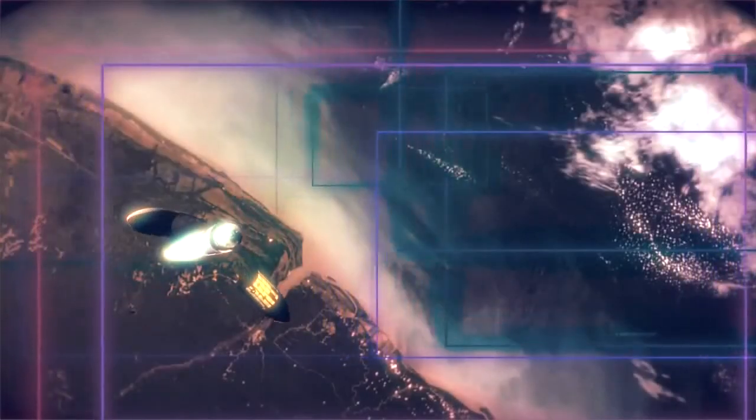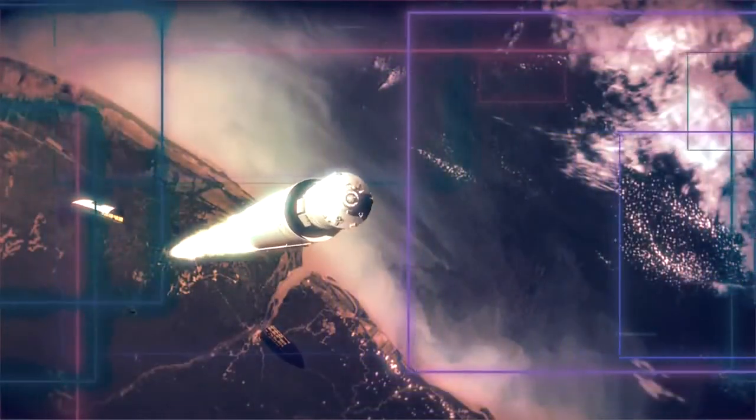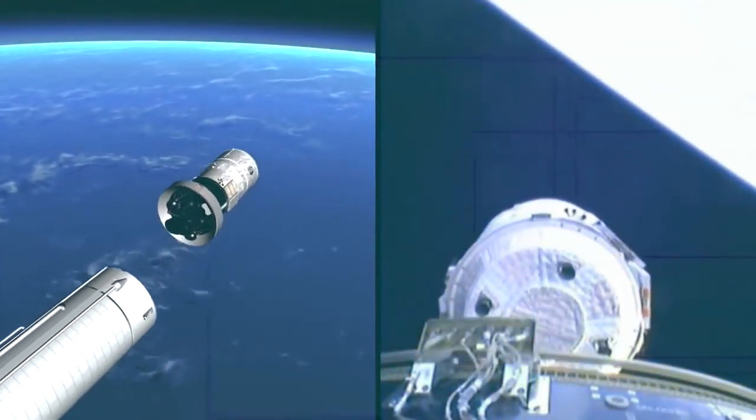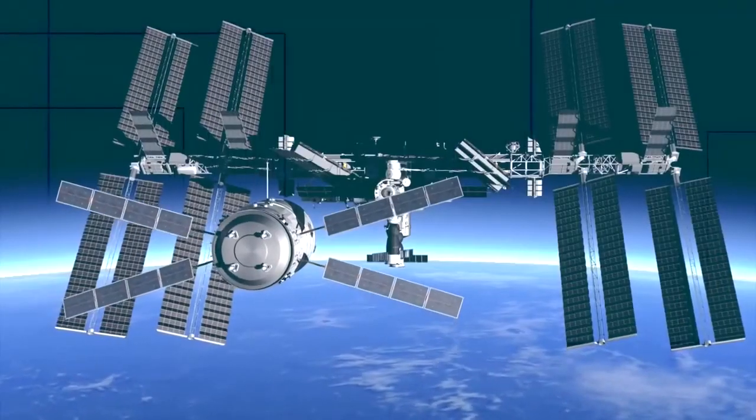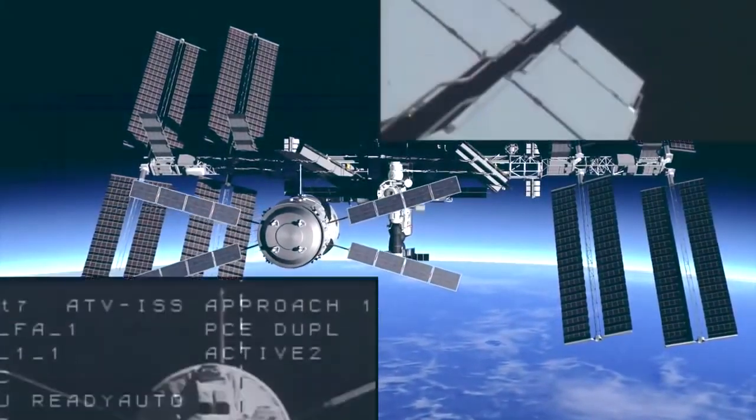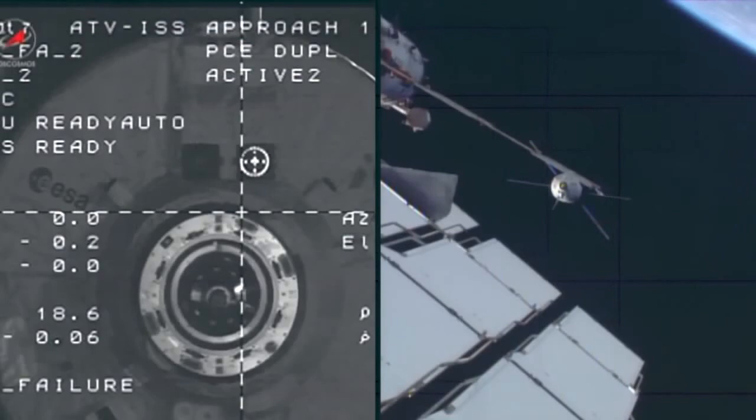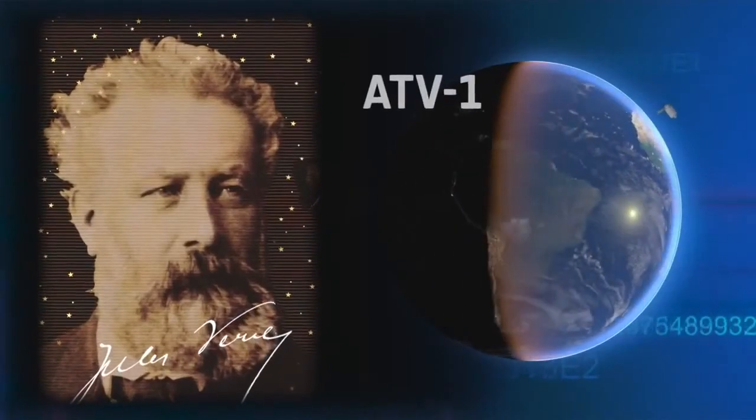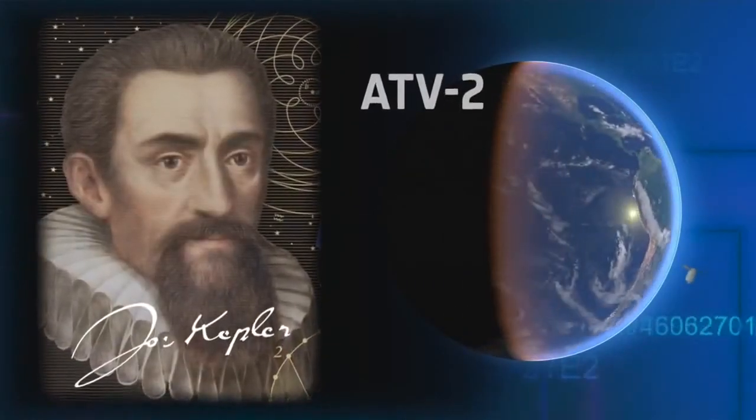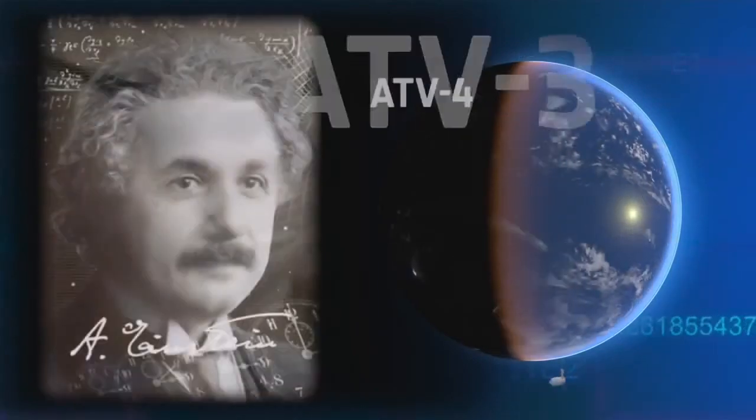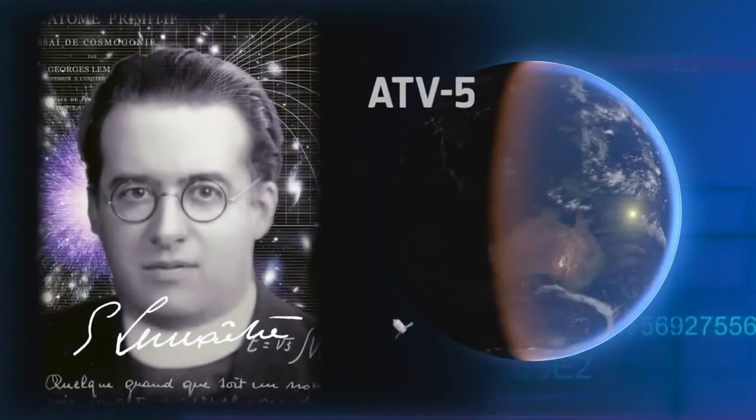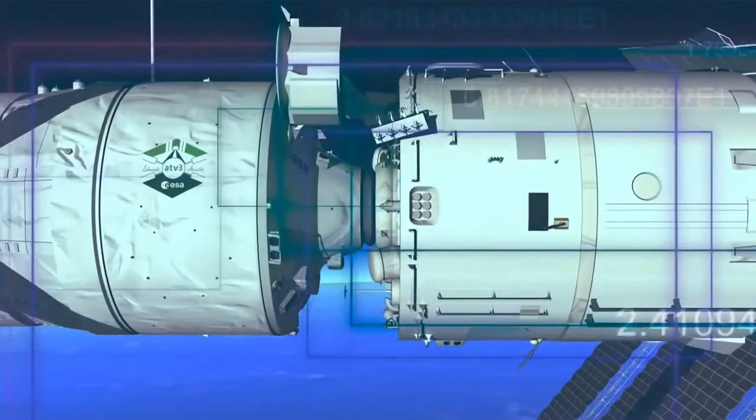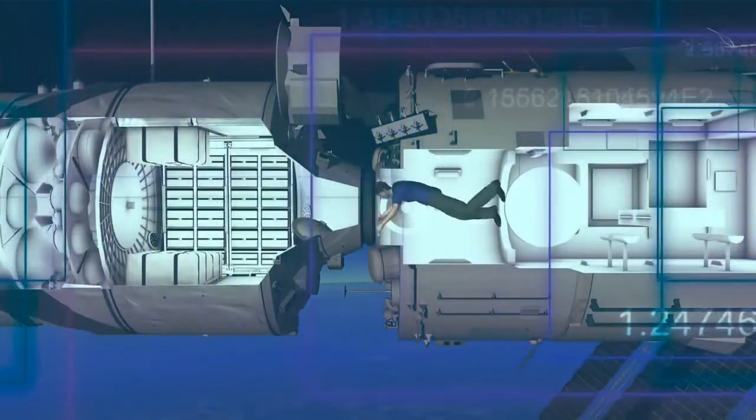The European Space Agency's automated transfer vehicle has a crucial role in maintaining human spaceflight operations on the International Space Station, humanity's permanent outpost in space. Each ATV is named after a scientist or individual who fundamentally changed the way in which we understand the universe.